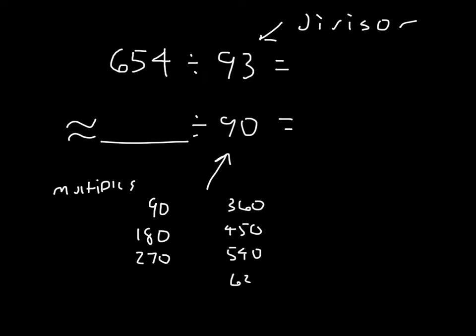540, 630. That would be 90 times 7. And then next one would be 720. The one that is closest to 654 is 630. And then that was 7 times 90 equaling 630. So that's 630 divided by 90. And then so 630 divided by 90 should equal 7.